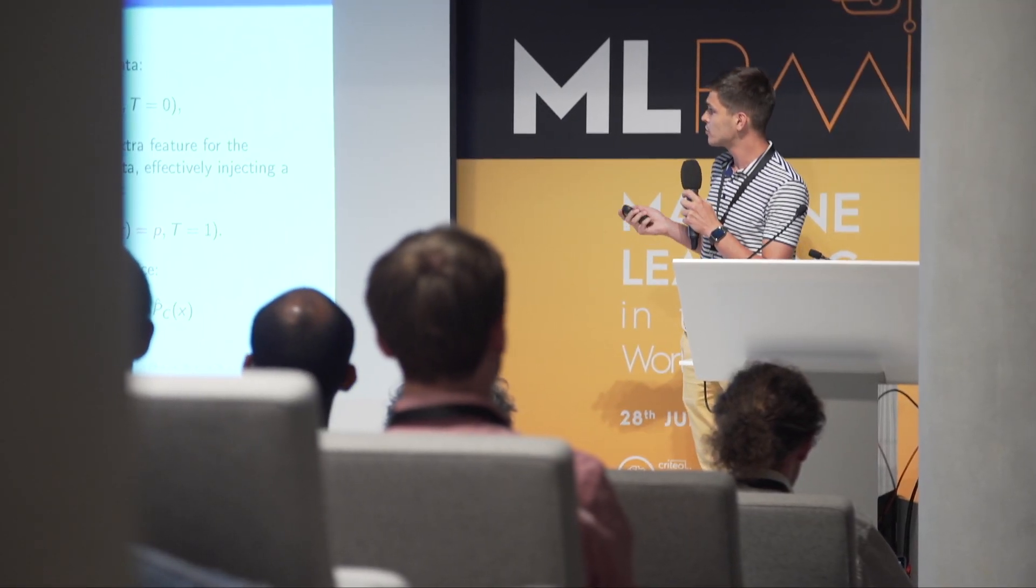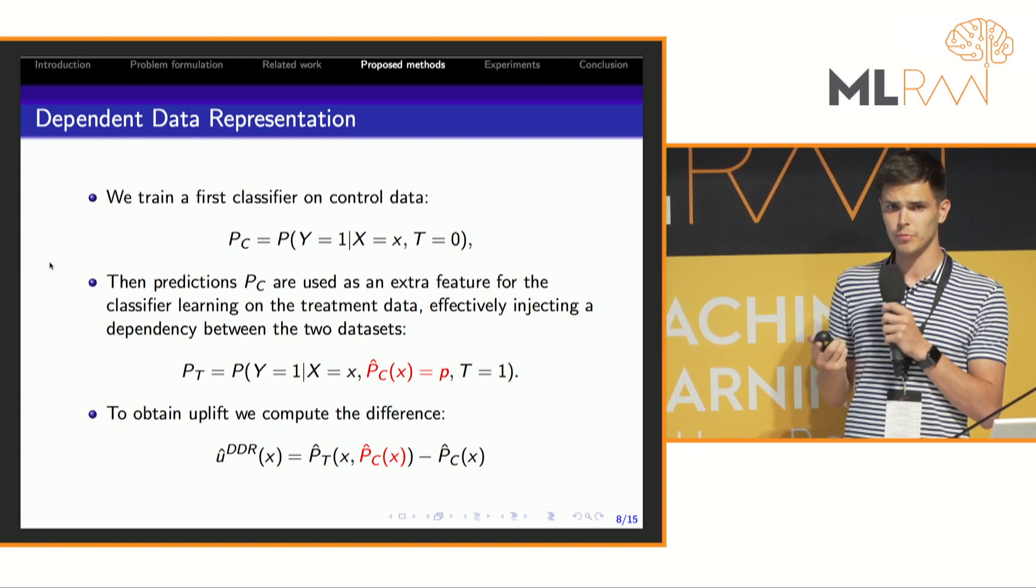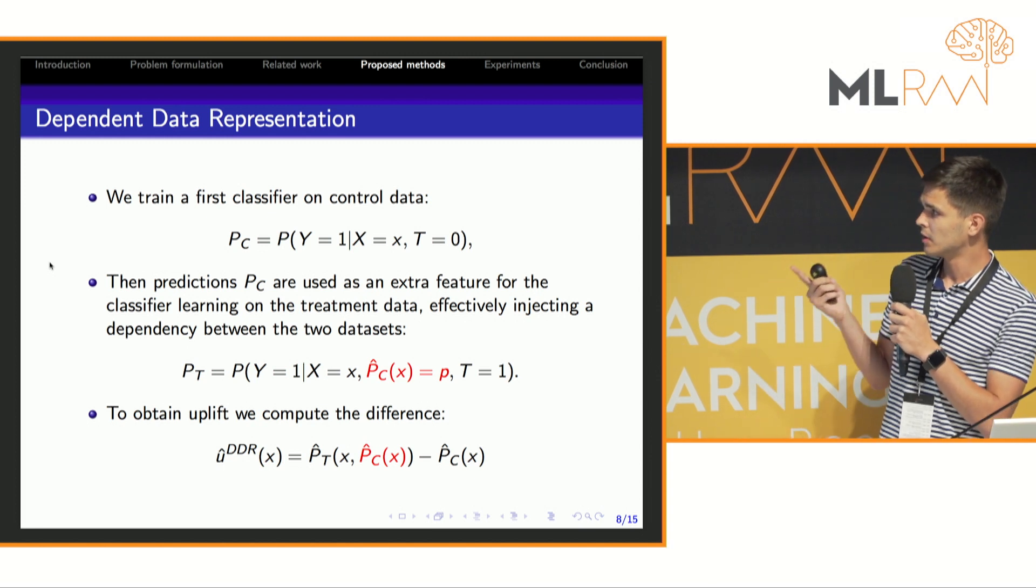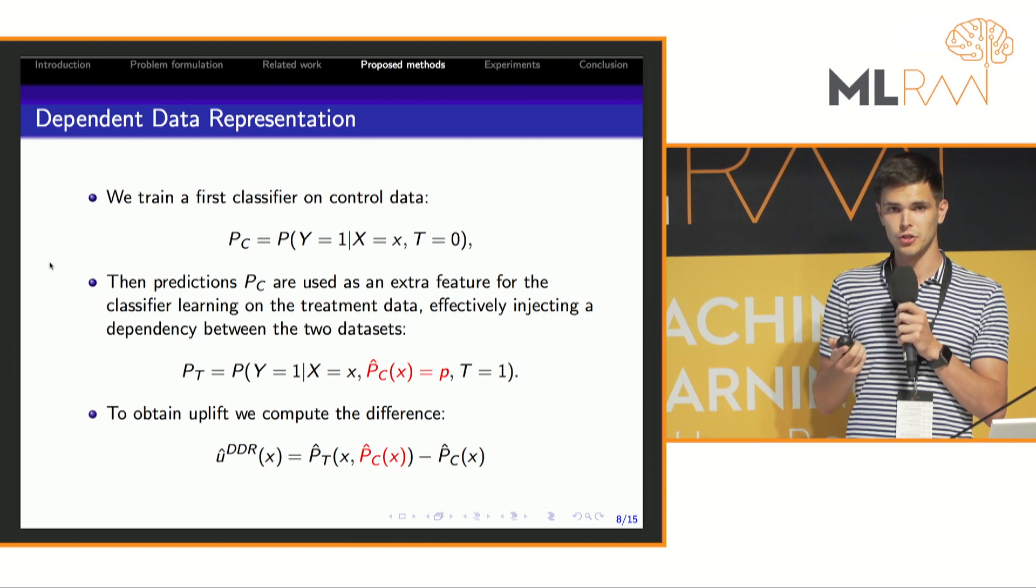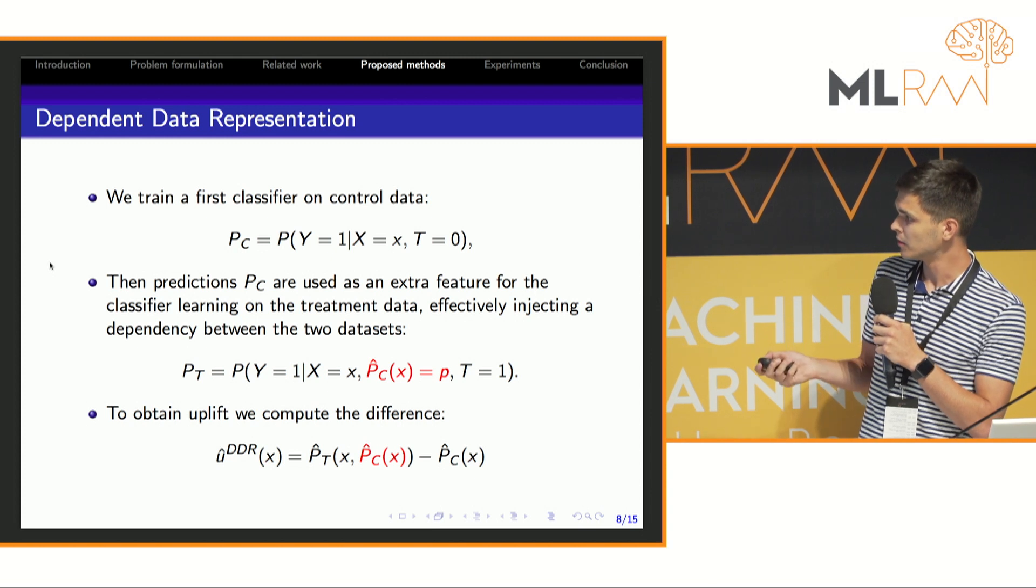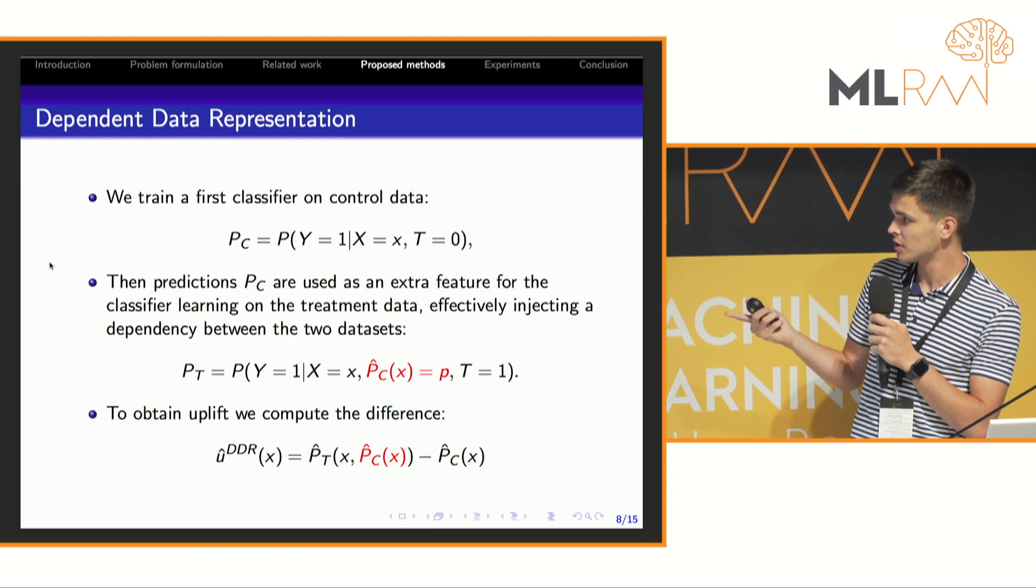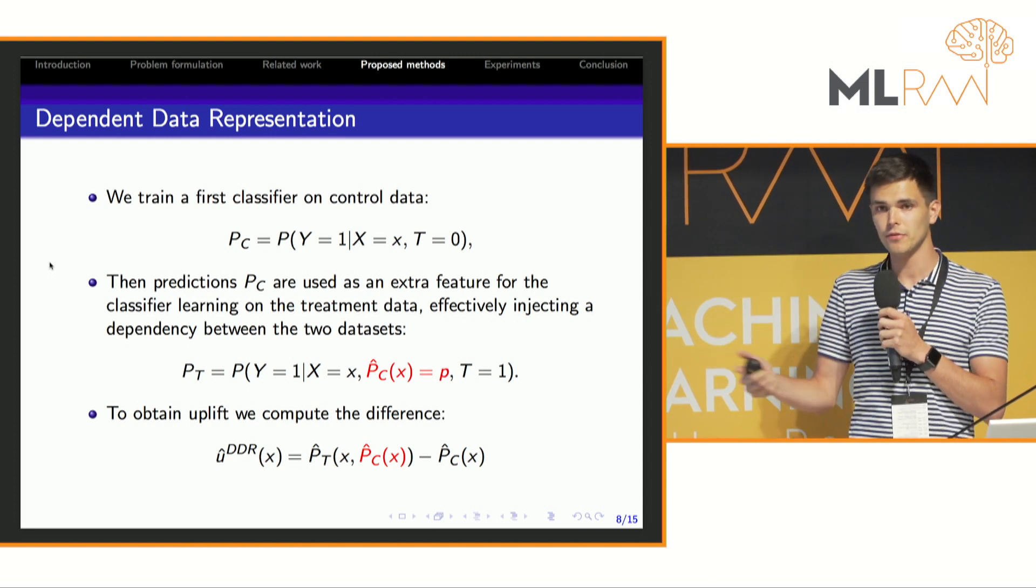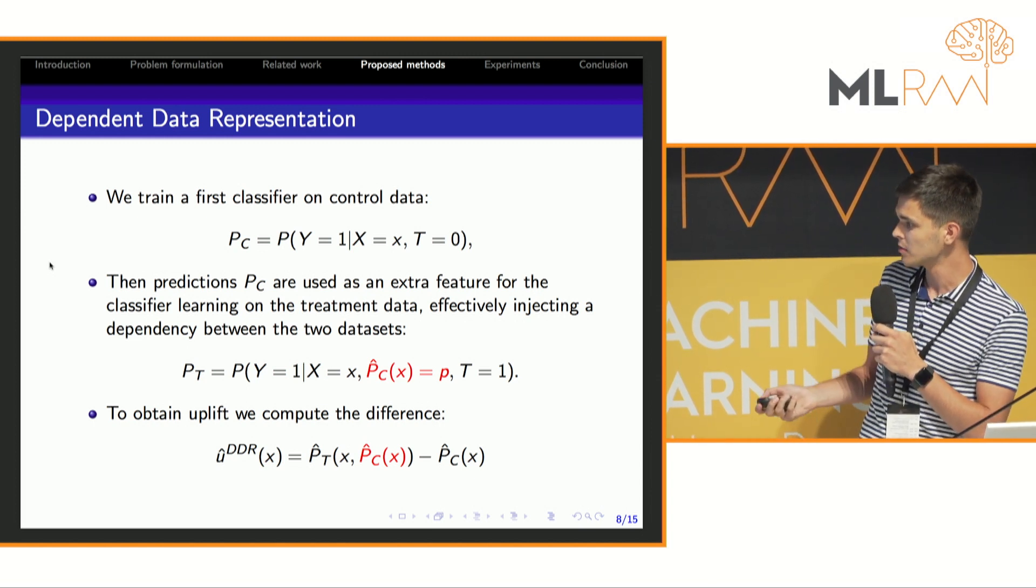We propose two new methods for this problem which are based on different data representations. Dependent Data Representation, or DDR, is based on classifier chains method. At the beginning we train the first classifier on group C, and then use predictions of this classifier as an extra feature for the second classifier, which can be trained on group T. We then obtain uplift as follows.